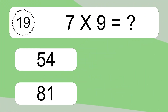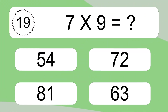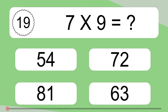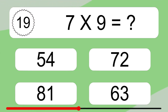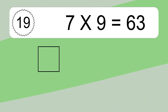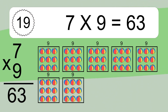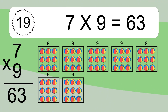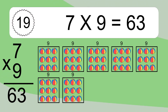Seven times nine equals what? Seven times nine equals 63. We have seven boxes, and each box has nine colorful balls inside. If you count all the balls in all the boxes together, you will have seven times nine balls. This equals 63 balls.